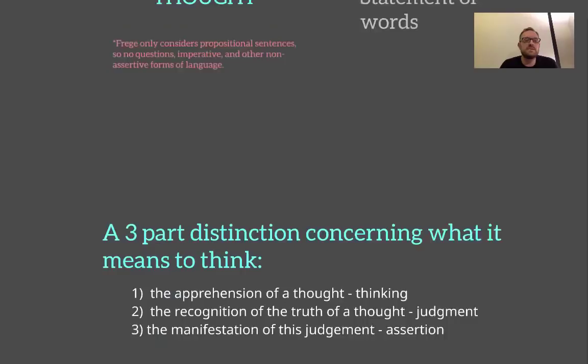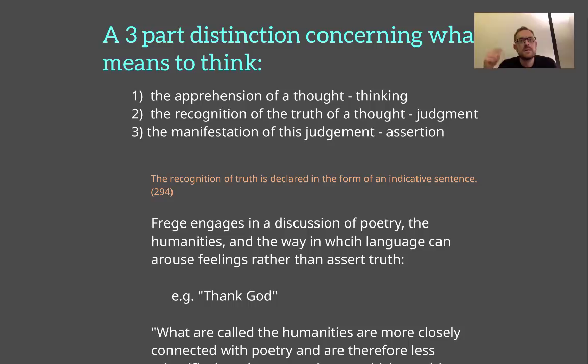Now since we're talking about thought and thinking, we have to recognize that whenever we talk about thinking, there are really three elements to the distinction we have to be concerned with. On the one hand, there's the apprehension of a thought — that's what Frege calls thinking. Number two is there's the recognition of the truth of a thought, which is the judgment. And then finally there's the manifestation of this judgment, which is an assertion. When I say that Donald Trump is the current president — to understand what I'm suggesting is to have a thought; to recognize that it's a true statement is to make a judgment; and to manifest that judgment by saying "it is true that..." is to articulate an assertion. So we have these three levels: thinking, judgment, and assertion.